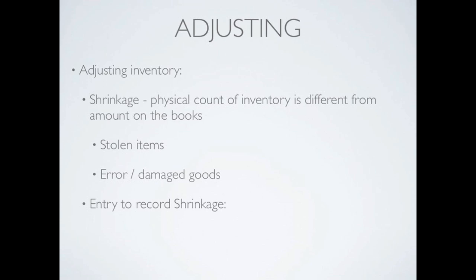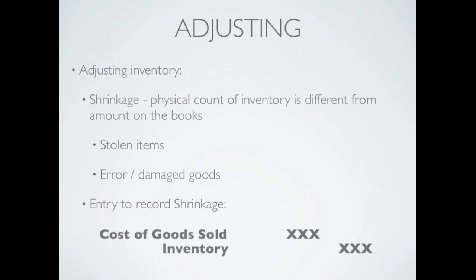When we have shrinkage we have to adjust our inventory to account for this because we no longer have that inventory on hand. However, we did pay for that inventory, so if it disappears or walks out the door we need to expense it. If we count our inventory and it's different from what's on the books, we'll need to increase our cost of goods sold and decrease our inventory by the difference.